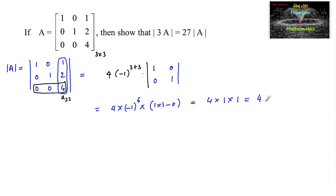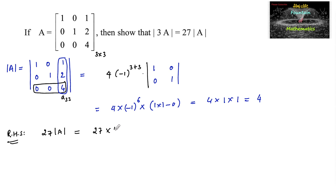So the determinant of A is 4. Now let's consider the RHS, which is 27 times the determinant of A. That is 27 × 4 = 108.